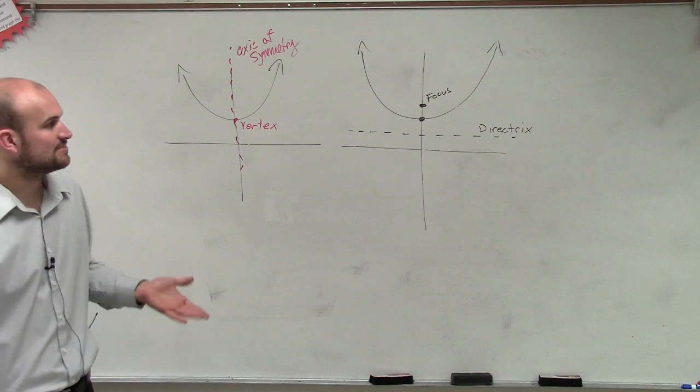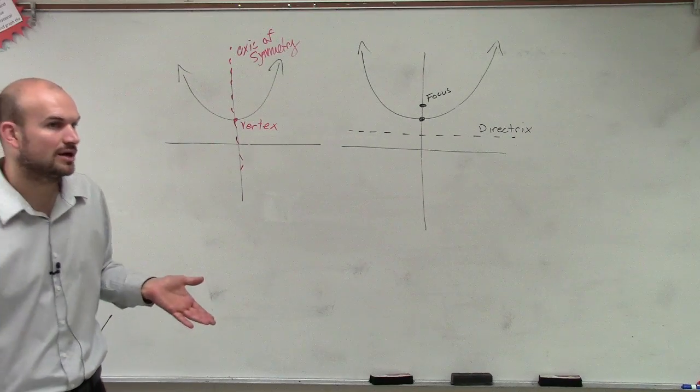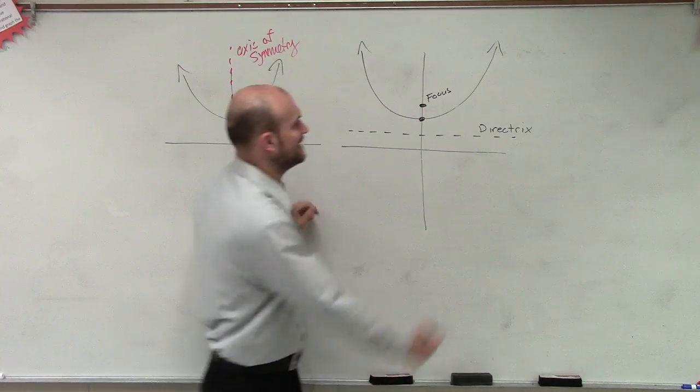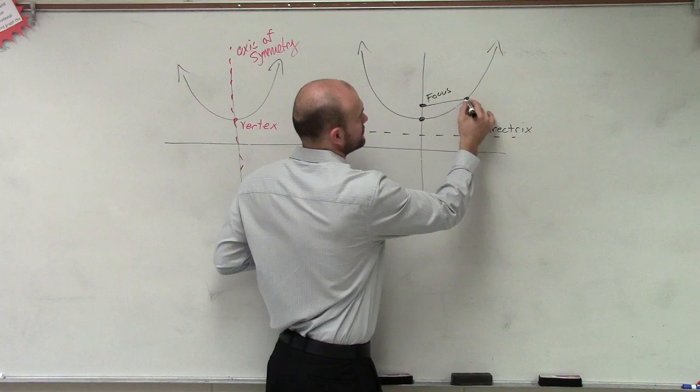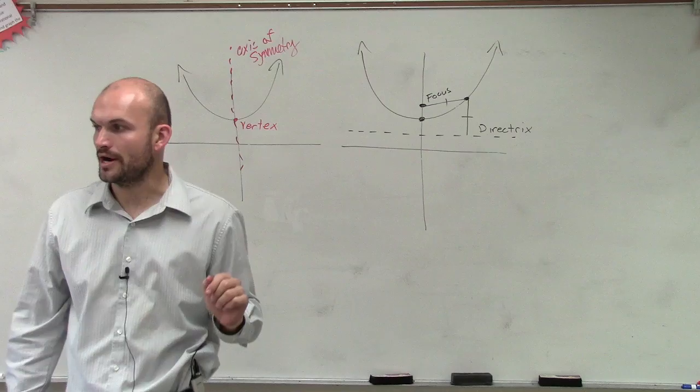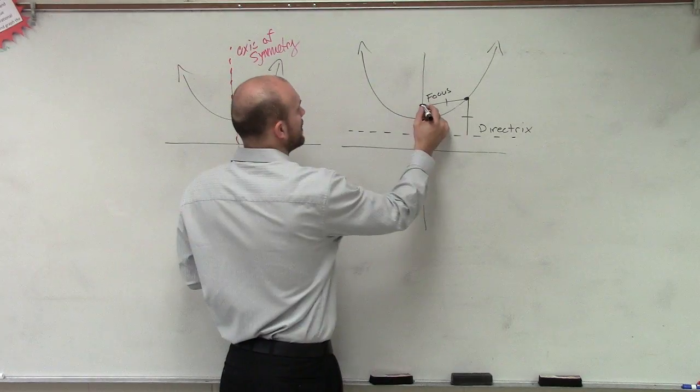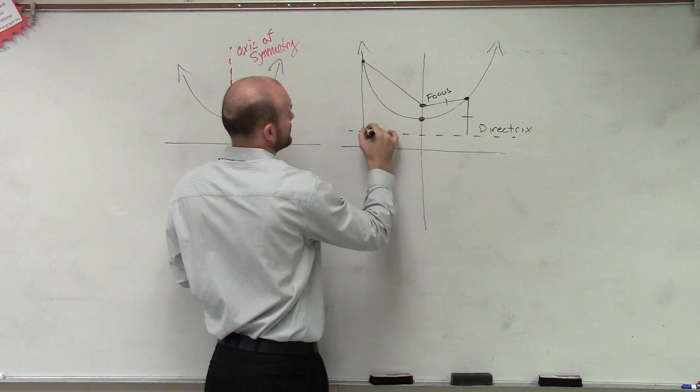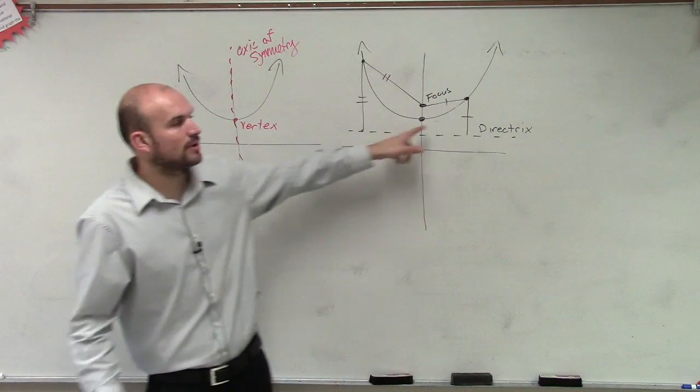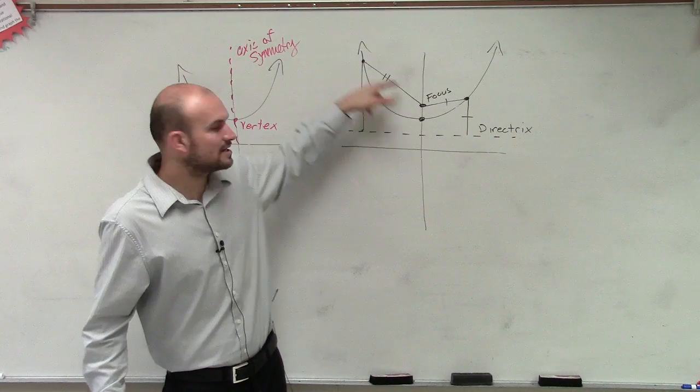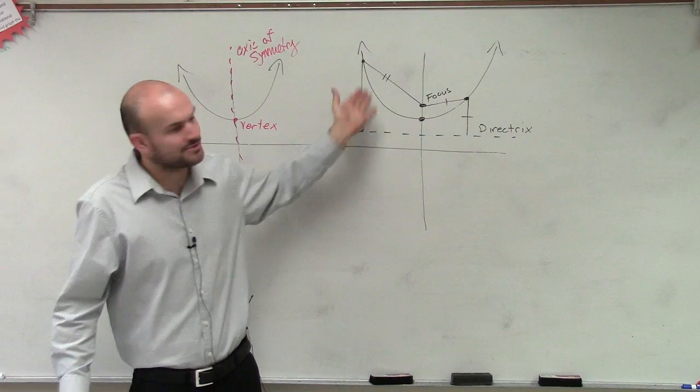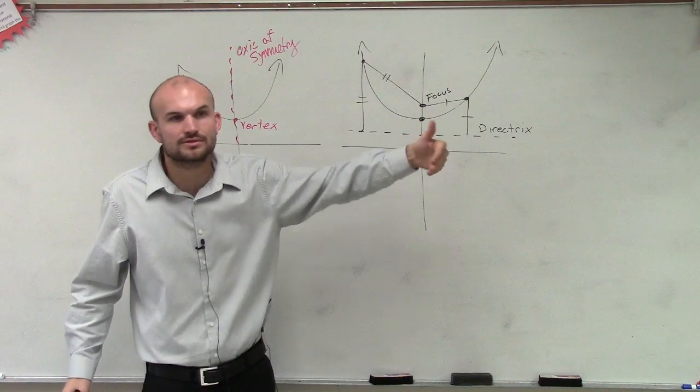And this actually comes into our definition of a parabola, that the distance from a focus to any point on our parabola is going to be exactly the same. It doesn't matter where I want to find a point, the distance from any point on my parabola to the focus and to the directrix is going to be exactly the same. Remember geometry, how you do the little tick mark, show congruency, right?